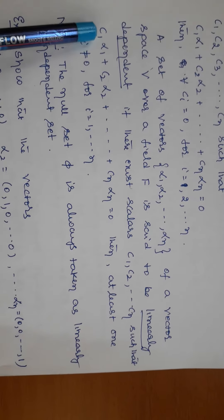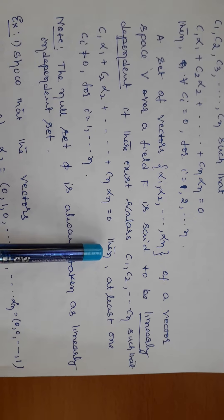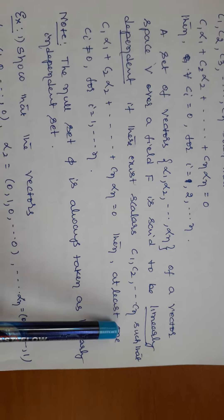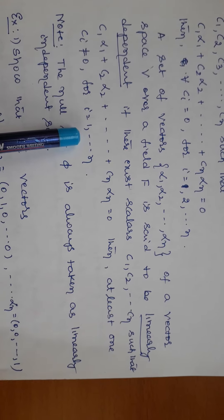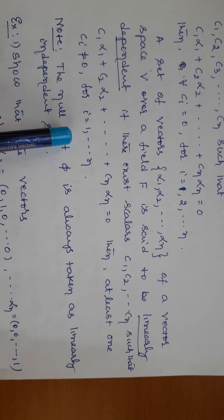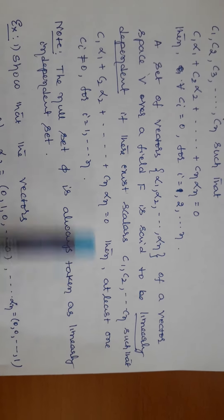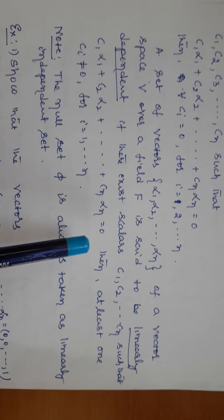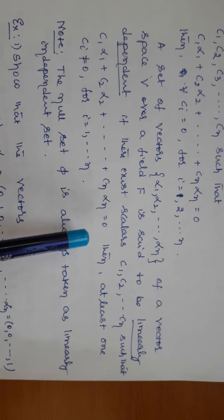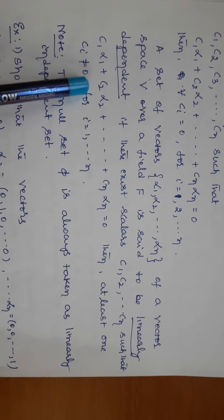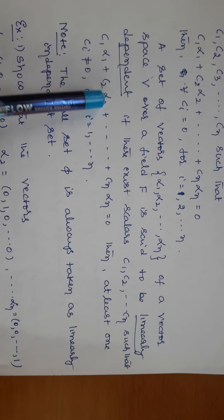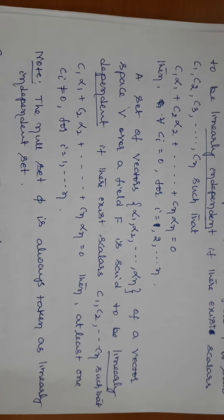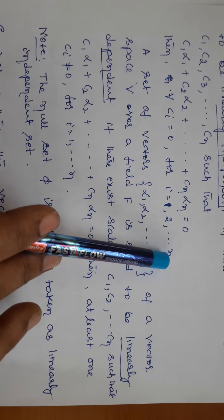At least one scalar is not equal to 0. For example, say C1 is not equal to 0 and the rest are 0. Then I keep C1 alpha 1 on the left hand side and take the rest to the right hand side. Since C1 is not equal to 0, I can multiply by 1 over C1. So I can express alpha 1 in terms of the linear combination of alpha 2, etc., alpha n — meaning alpha 1 depends upon these vectors. Therefore we say they are linearly dependent. That's why the condition for linear dependence is at least one scalar not equal to 0. Whichever scalar is not equal to 0, the corresponding vector can be written as a linear combination of the other vectors — it means dependent. But if every scalar is 0, none of the vectors can be written in terms of the others, therefore they are independent.